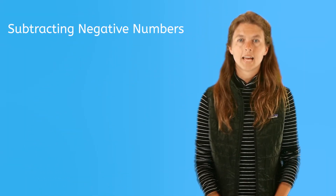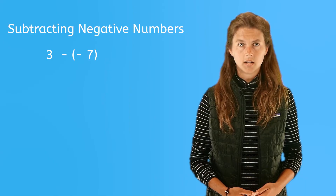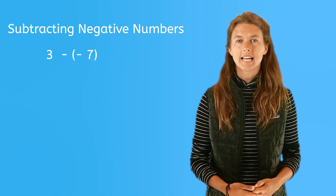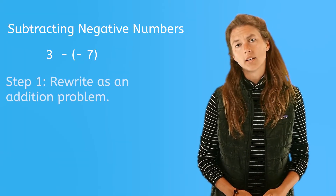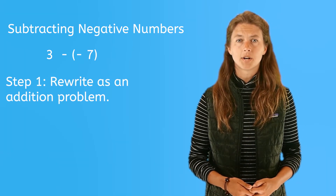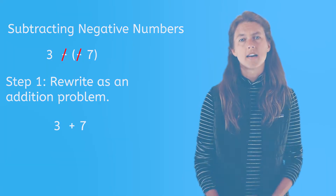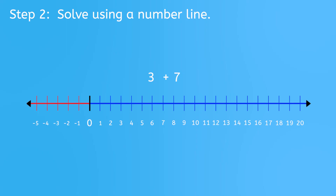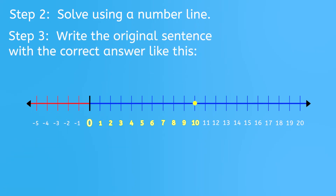Here is what I mean by this. Let's start with a positive integer and subtract a negative integer. Here we have three minus negative seven. Subtraction means moving to the left, but here we are subtracting a negative seven, so we end up moving to the right. Step one: rewrite the problem to show adding the positive number instead of subtracting the negative one — rewrite three minus negative seven as three plus seven. Step two: to solve using a number line, we always start at zero, count up three, then count up another seven. Three plus seven equals ten. Step three: write the original sentence with the correct answer — three minus negative seven equals ten.